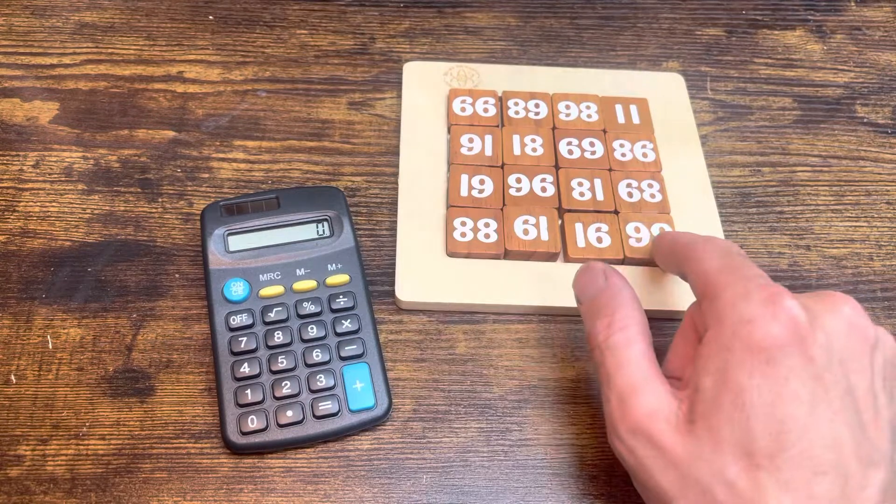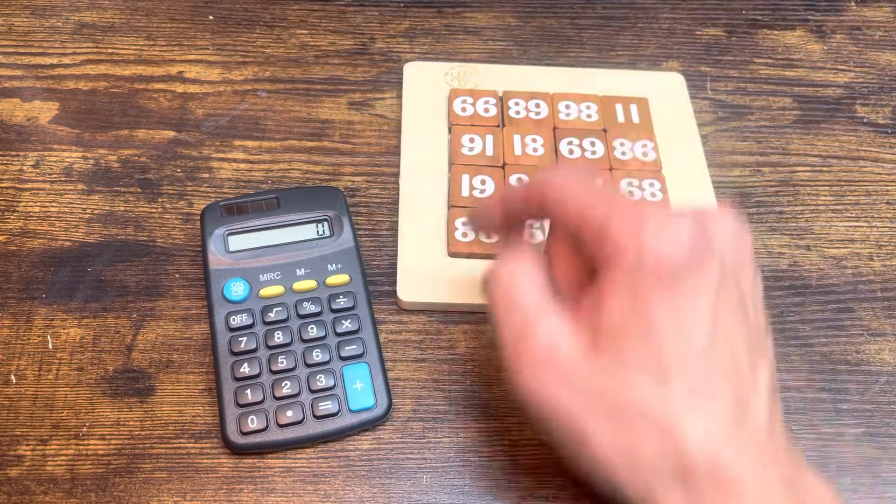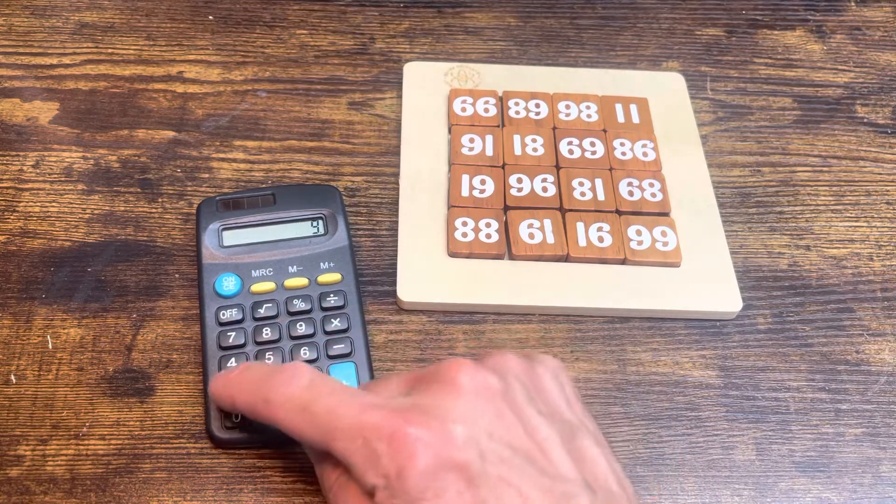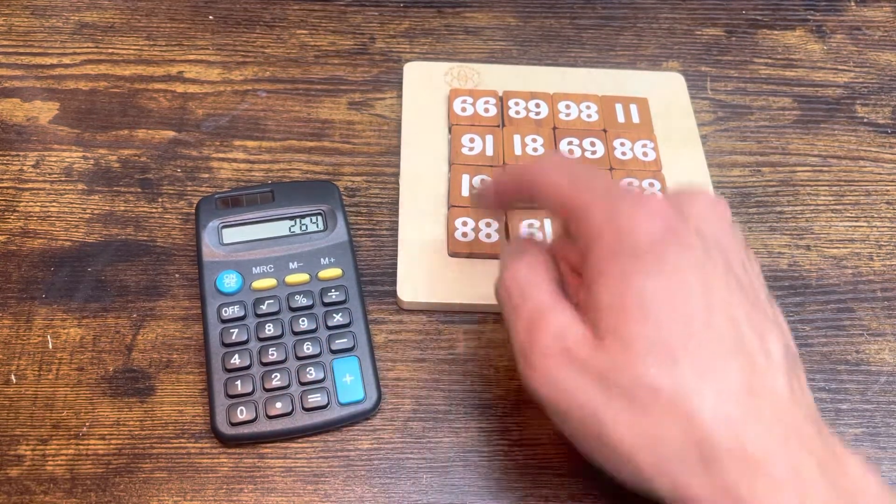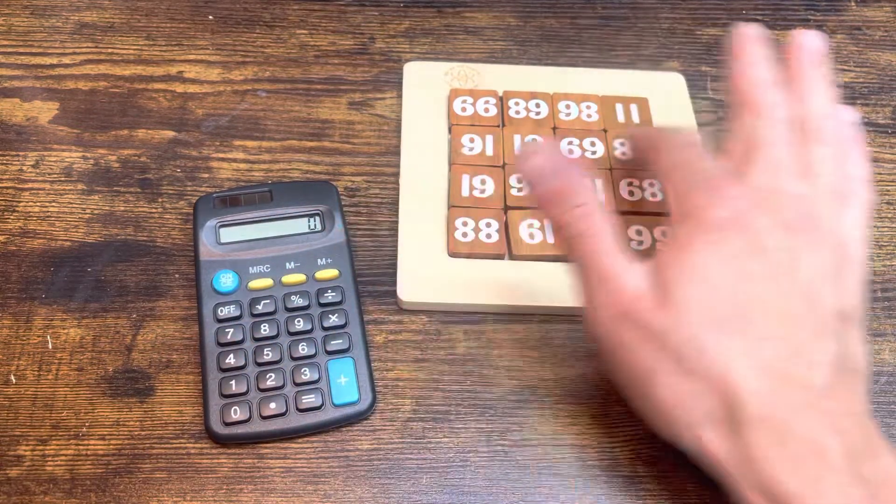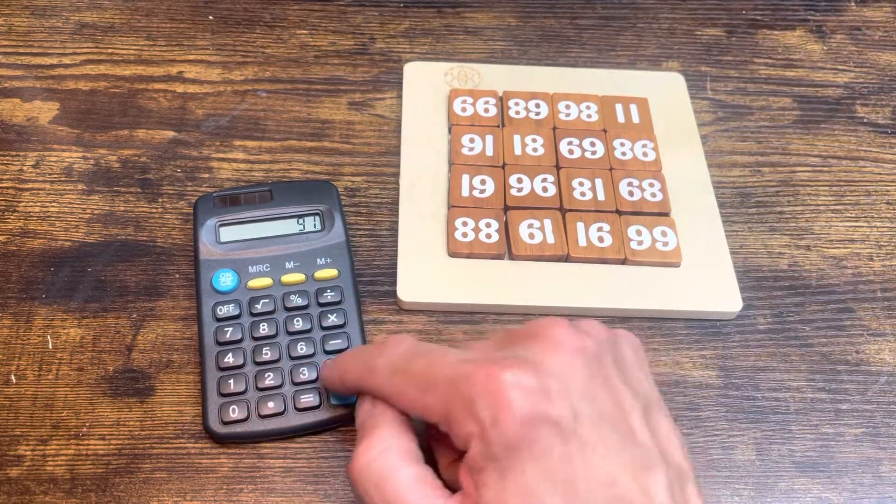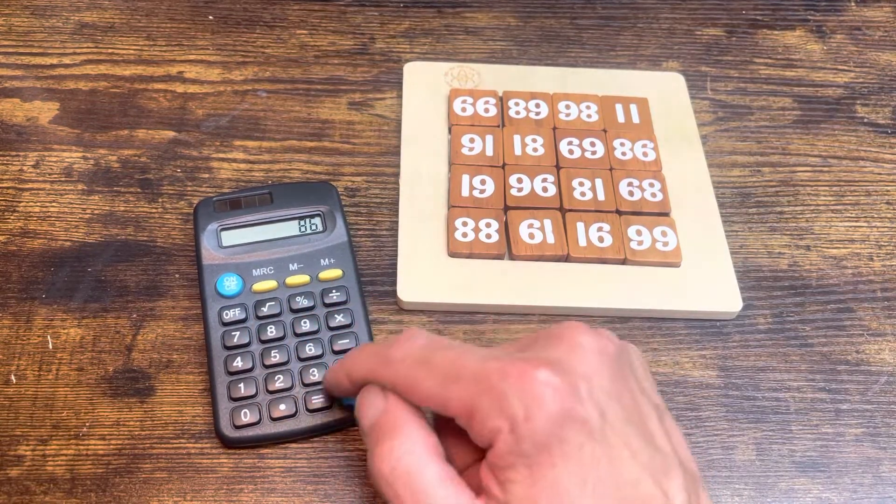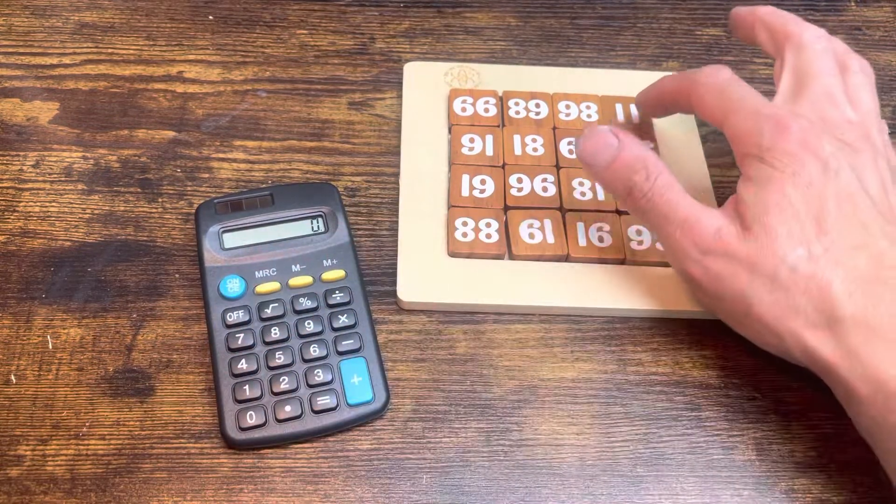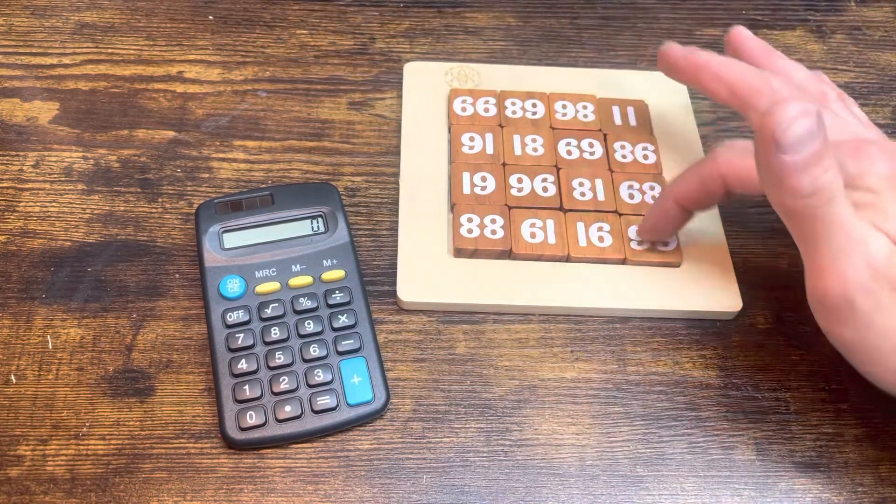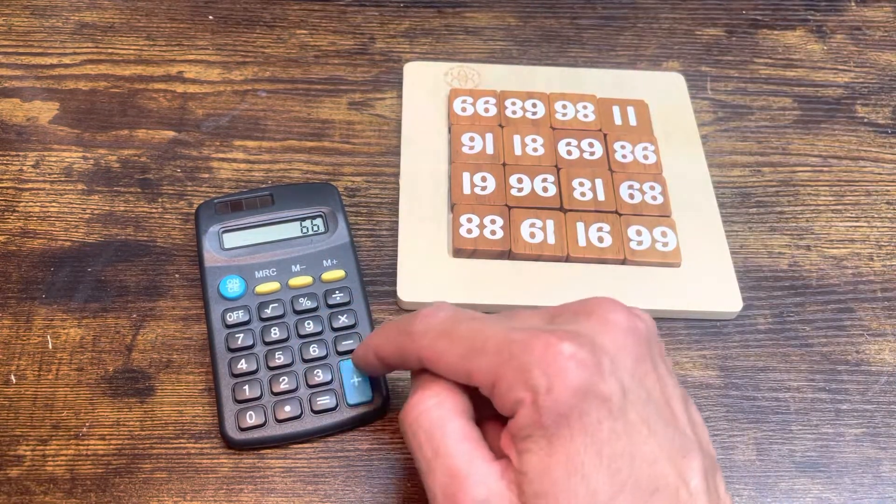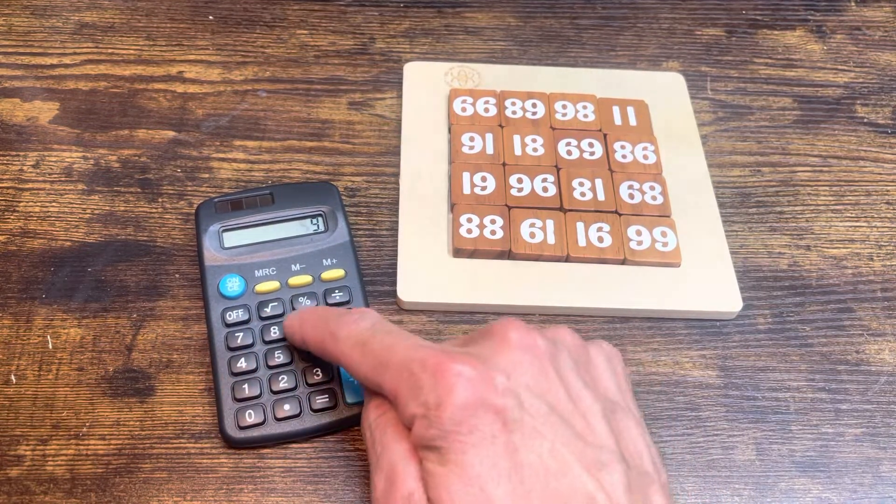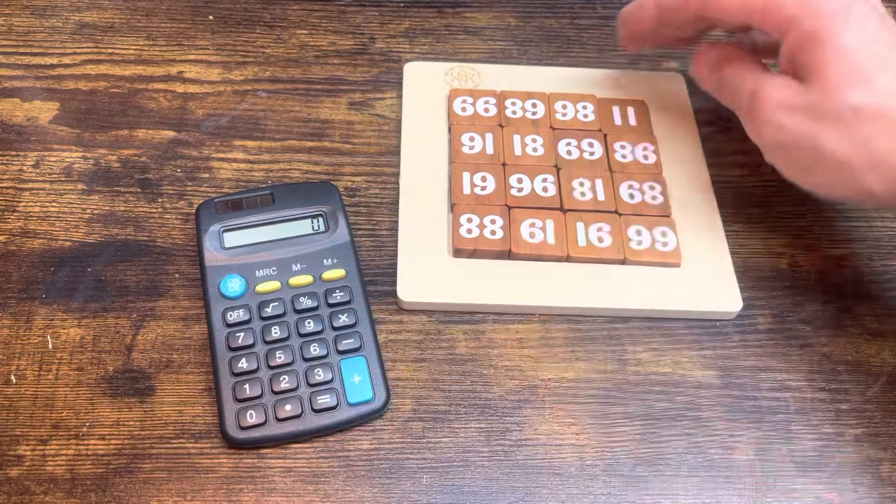So if that is, what about up here? 88 plus 19 plus 91 plus 66. 264. Let's just do random them across the middle: 91, 18 plus 69 plus 86. There we go, pretty confident. We know that is because that's the one with the 11 in it. Let's try across here: 66 plus 18 plus 81 plus 99. 264, there we go.